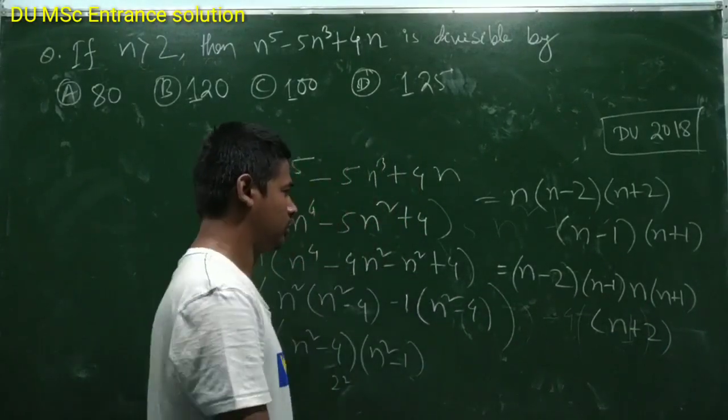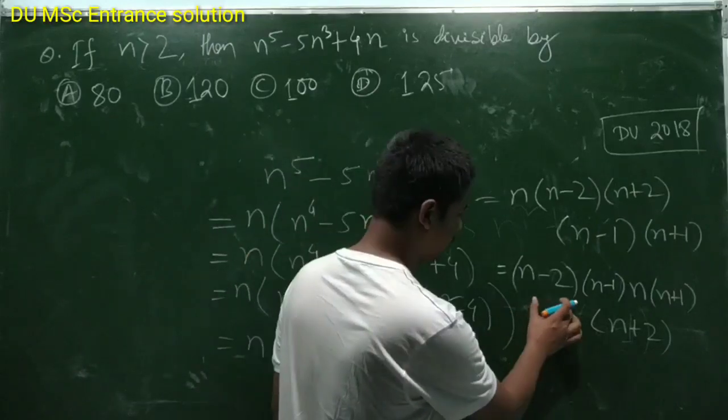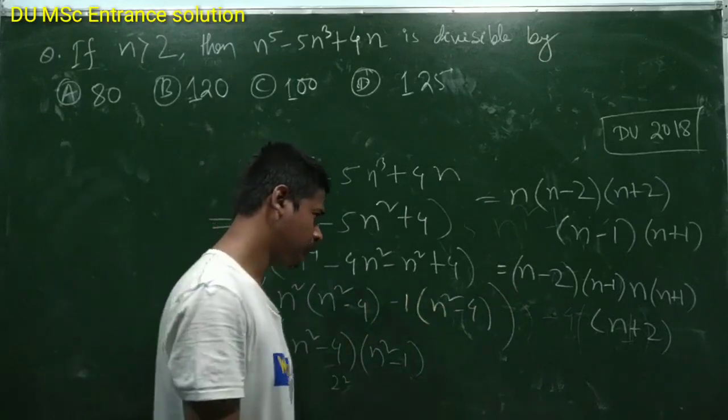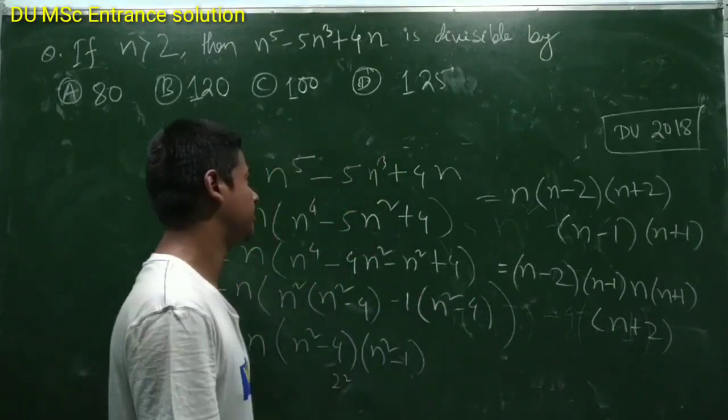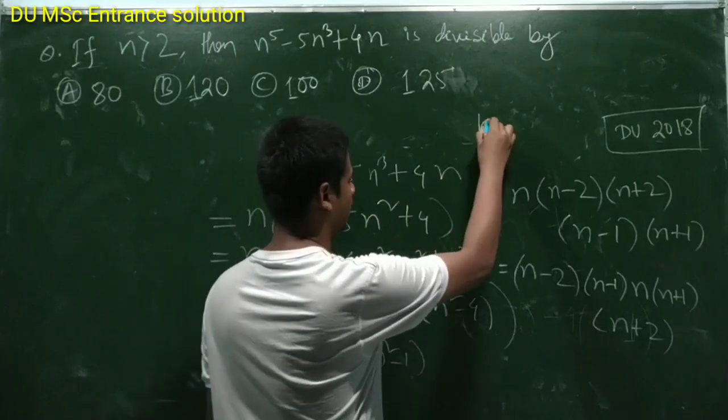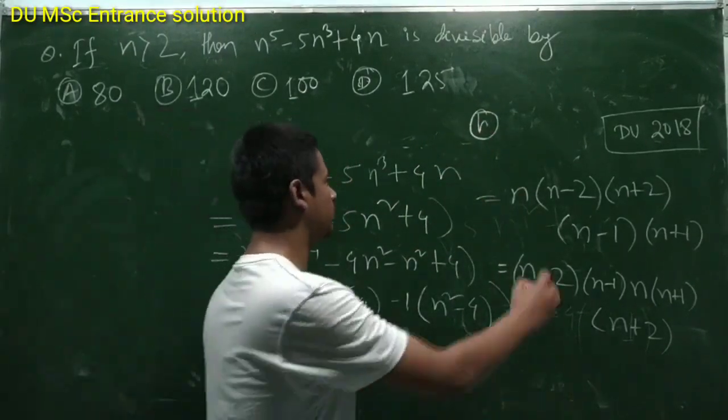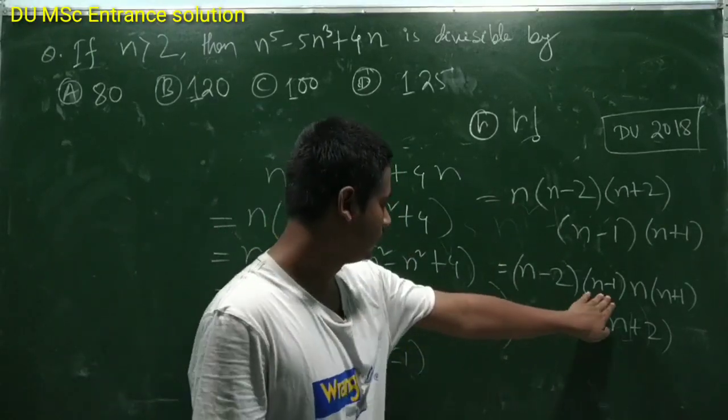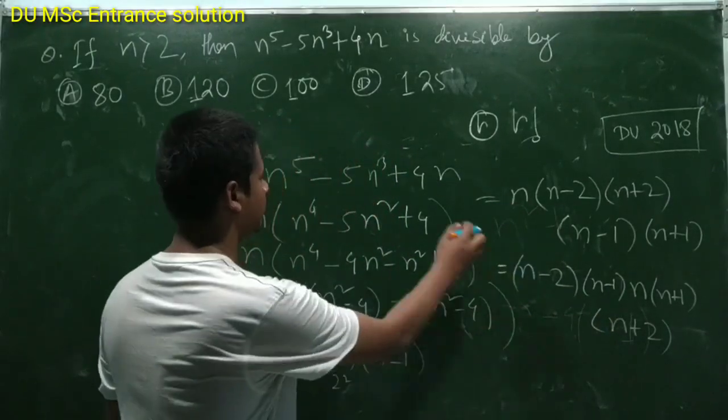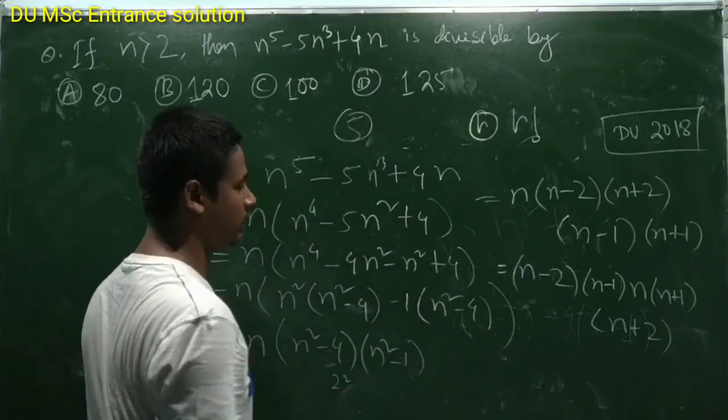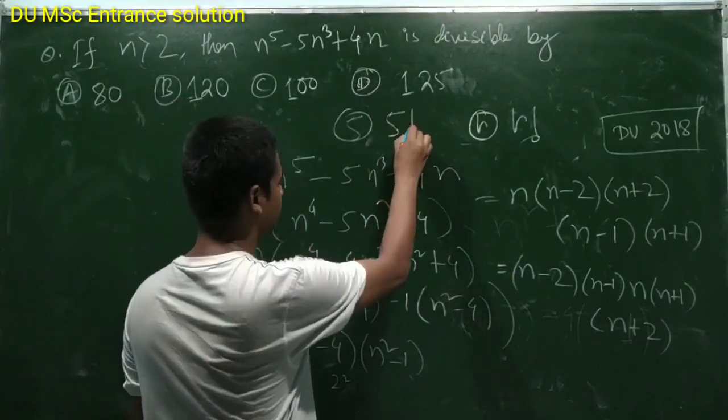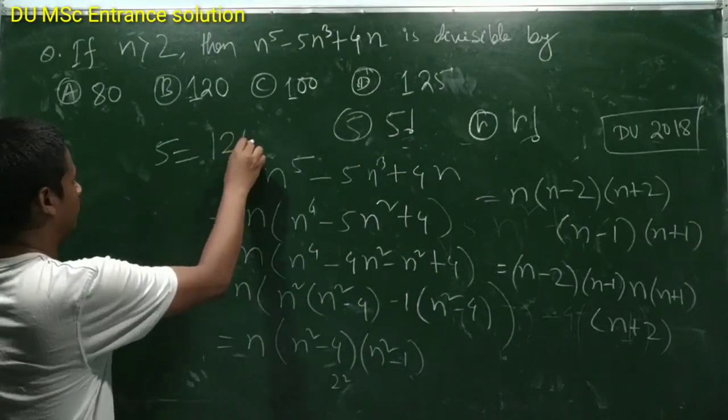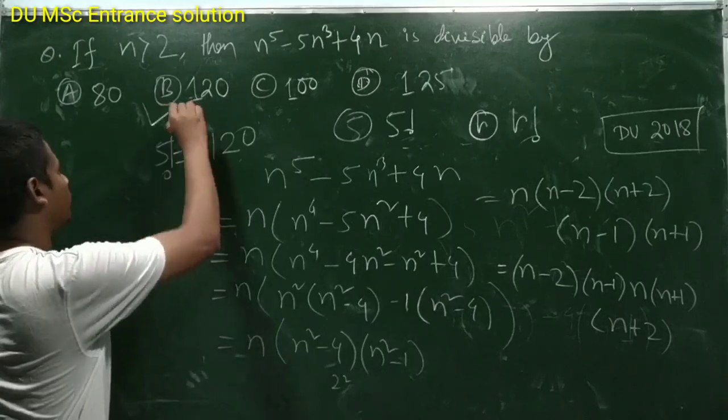So we know that multiplication of r consecutive integers is always divisible by r factorial. So this is nothing but multiplication of five consecutive integers, so which is divisible by five factorial. And five factorial we know is 120.